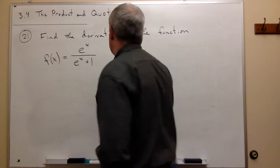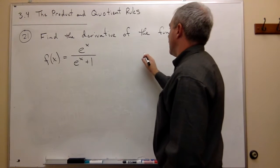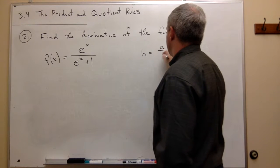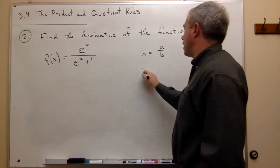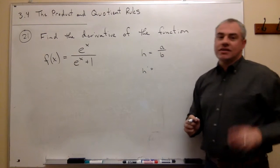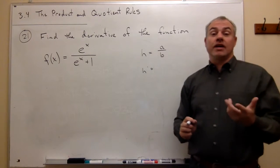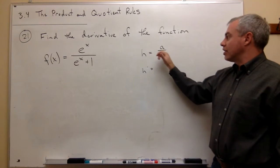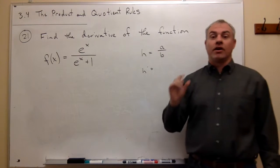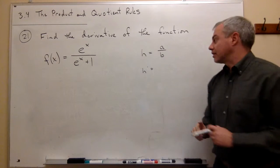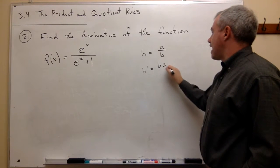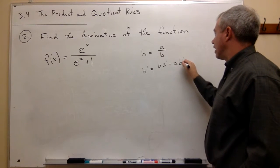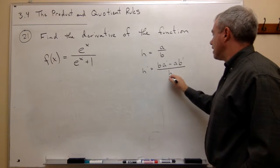If I have that h is equal to function a divided by function b, then h prime is going to be — and this is the key when you use the quotient rule — always write the thing on the bottom, the function in the denominator, down first without changing anything. So I write: b times a prime minus a times b prime, all divided by b squared.